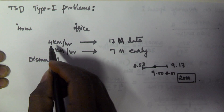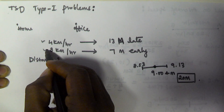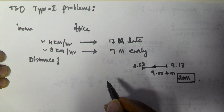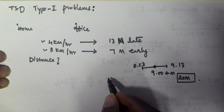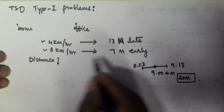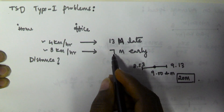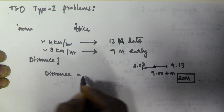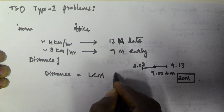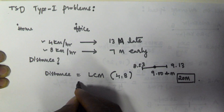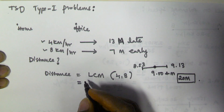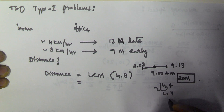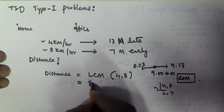In both cases — the first day and the second day — the distance is constant. Since the distance is constant, I can take any constant value as the distance between his home and office. I will take the distance as equivalent to the LCM of the speeds, that is LCM of 4 and 8, which is 8 kilometers.